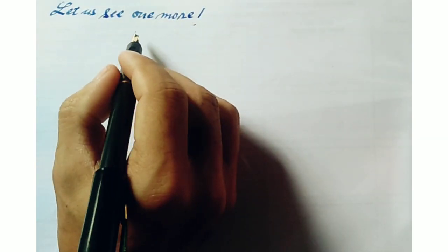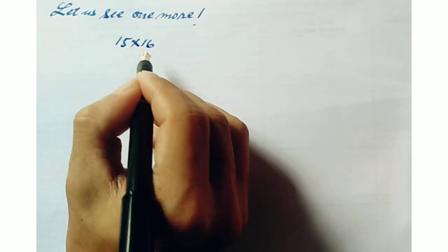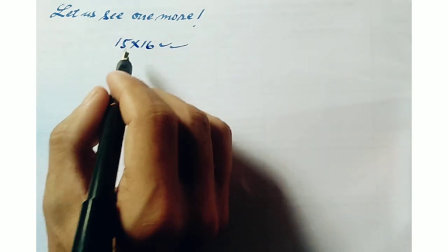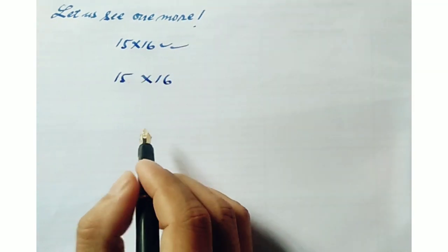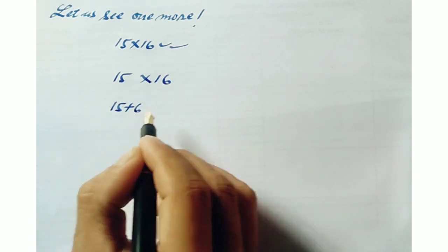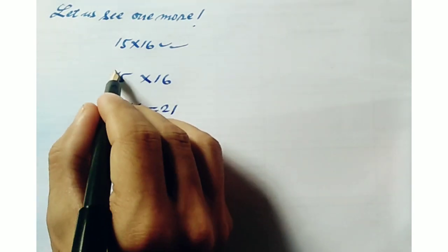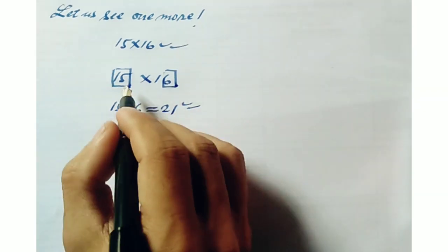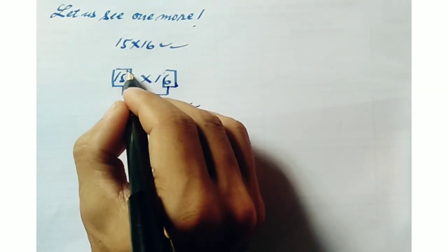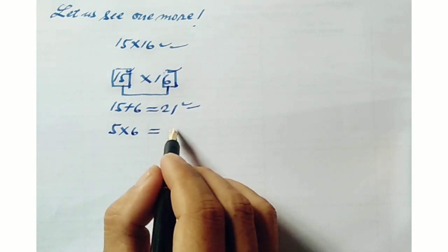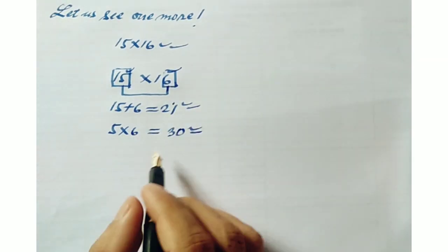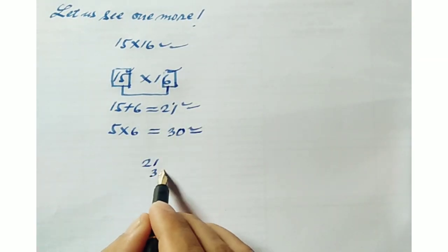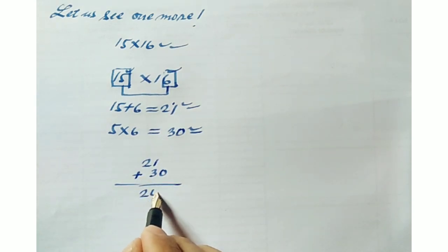Then let us write in the format 1506 like this, then you will get the sum 156. Let us see one more example of 15 into 16. Firstly, we will add 15 plus 6, that will give us 21. Now we will multiply this 5 and 6, that is 5 into 6 gives us 30. Now this 30 and 21 will be put in the format like before, then we will get 240, which is our answer of 15 into 16.